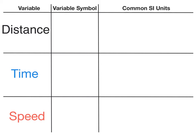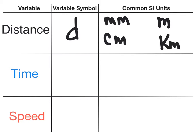The first variable is distance, which is defined as the length of a path traveled. Its variable symbol is a lowercase d, and the common SI units for distance are millimeters, centimeters, meters, and kilometers.